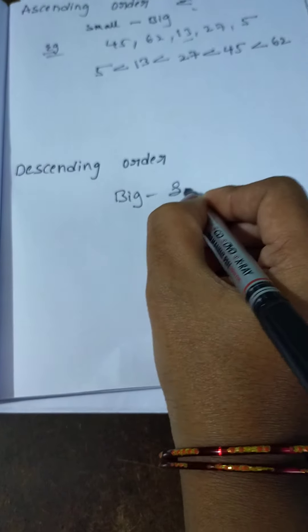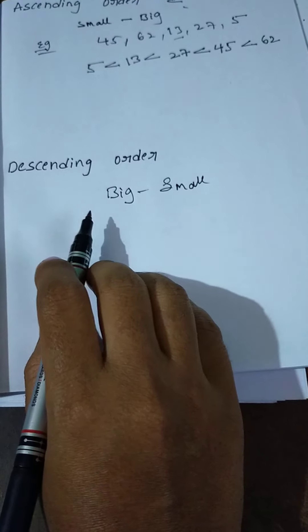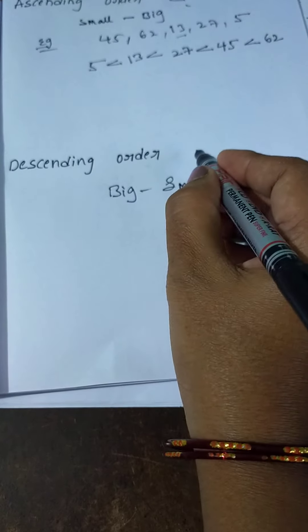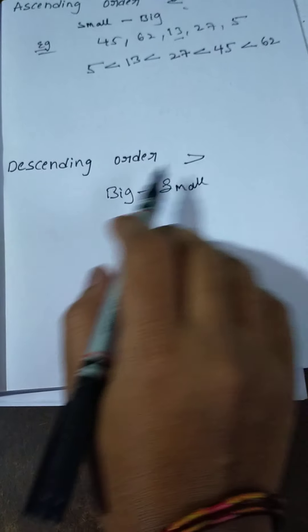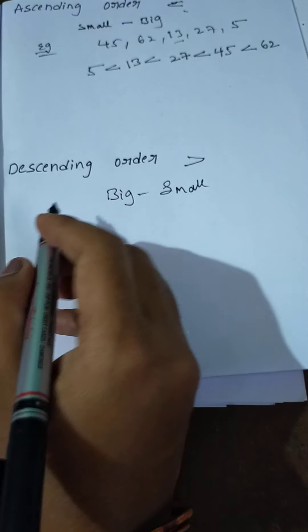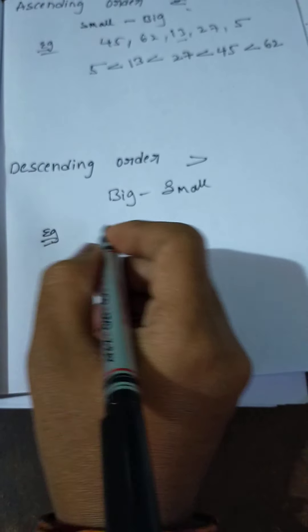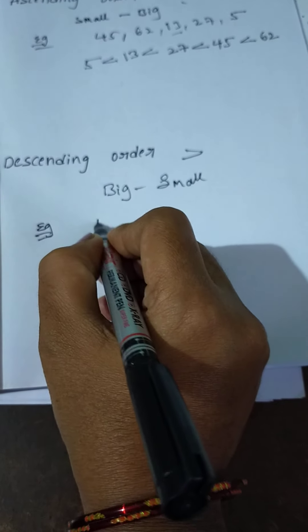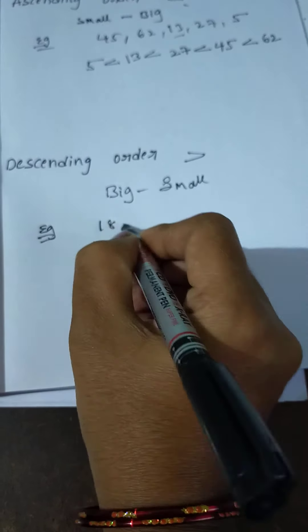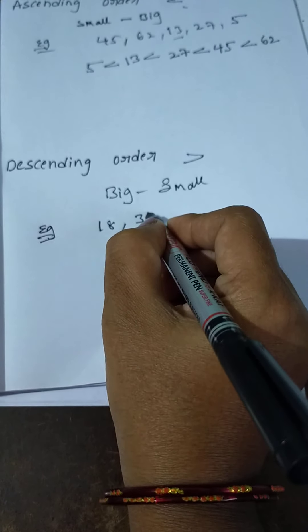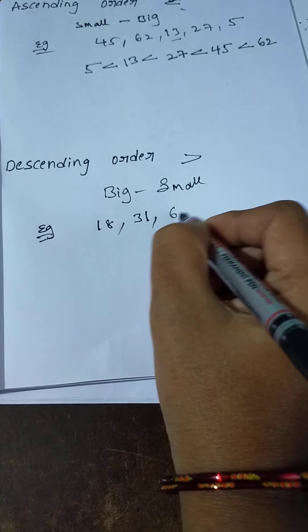Next one is descending order. Descending order means biggest to smallest — big to small. In this situation, use greater than.